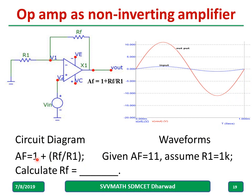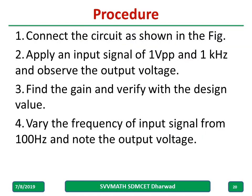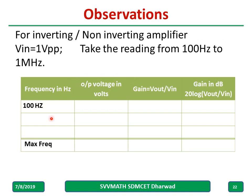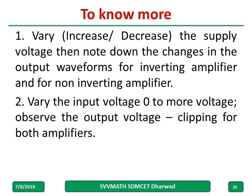For the non-inverting amplifier: the output is amplified but there is no phase inversion. The gain equation is Af = 1 + Rf/R1. For a given Af, choose a particular Rf. The procedure is to connect the circuit as shown in the figure and apply the input signal the same way as done for the voltage follower — repeat the same procedure and tabular column, varying frequencies from 100 Hz up to the maximum, and plot the graph. Input voltage should be varied from zero to higher voltages.